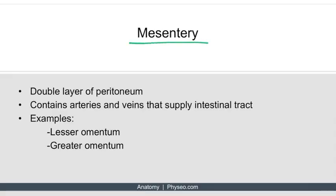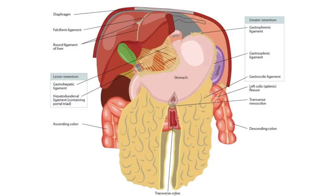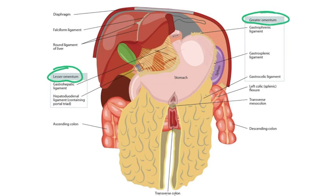Now let's focus on the term mesentery. Mesentery refers to a double layer of peritoneum. Within the mesentery, you have arteries and veins that supply the intestinal tract. The lesser omentum is an example of mesentery, and the greater omentum is an example of mesentery. This anterior view of the abdominal cavity shows the lesser omentum as a double layer of visceral peritoneum and the greater omentum labeled as well, also a double layer — which makes it a mesentery.